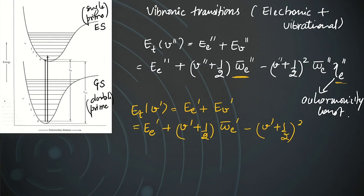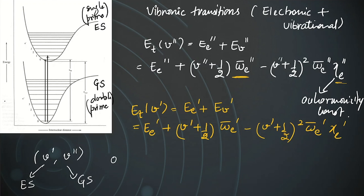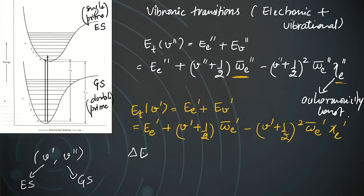We represent the transitions with the excited state written first and the ground state second — this is the standard convention. For example, going from ground state v=0 to excited state v=0 is written as (0,0), and from ground state v=0 to excited state v=1 is written as (1,0).